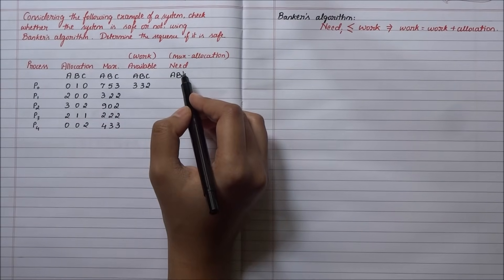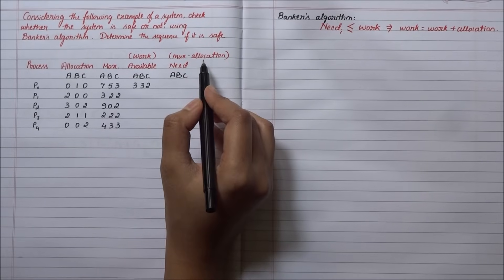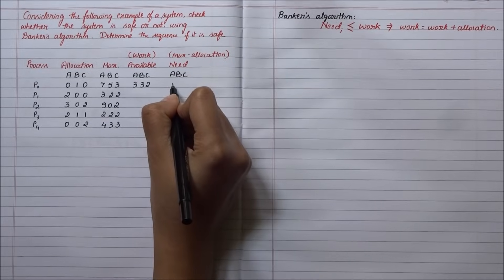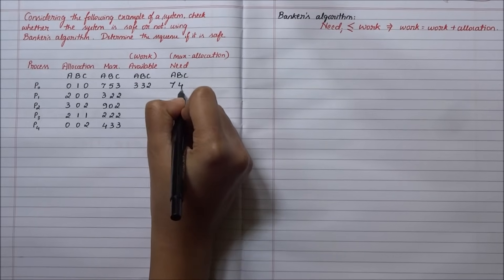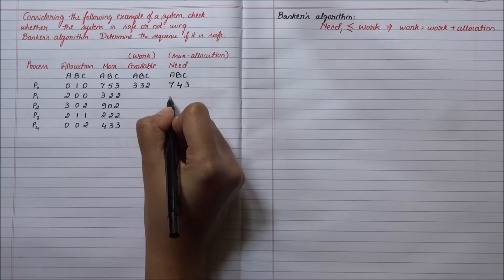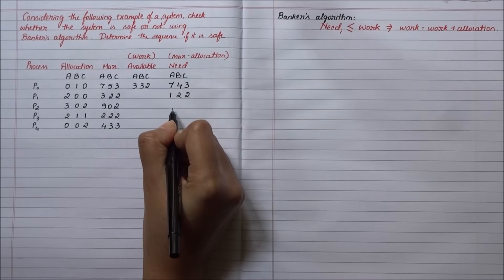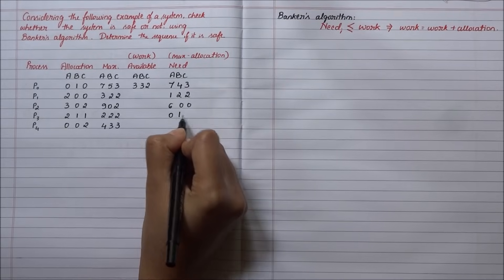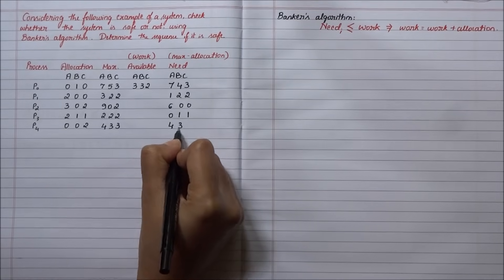We need to find out the need matrix by subtracting allocation from max. So it will be 7-4-3, 1-2-2, 6-0-0, 0-1-1, 4-3-1.